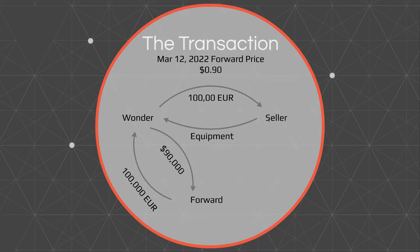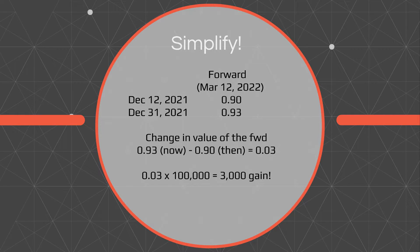In exchange for the hundred thousand euros, Wonder will get the equipment they need for their business from the seller. So step one is exchanging to get the euros needed, and step two is transacting for the equipment — all taking place at March 12th. At December 31st, the forward exchange contract they locked in will have changed in value. Instead of 0.90, they would have had to pay 0.93, meaning they'd pay $3,000 more for the hundred thousand euros. So they have a $3,000 gain.